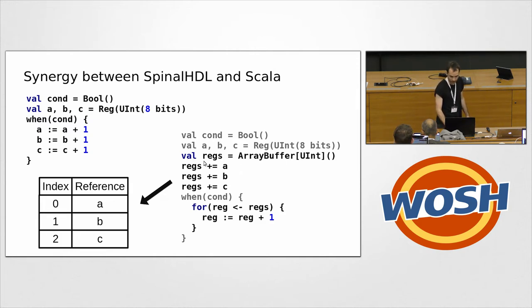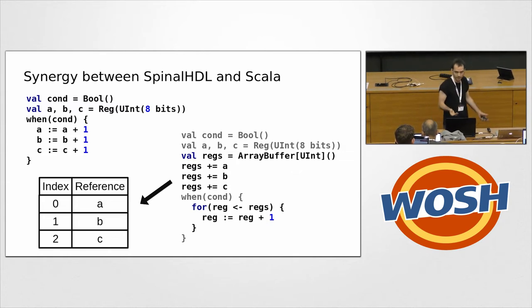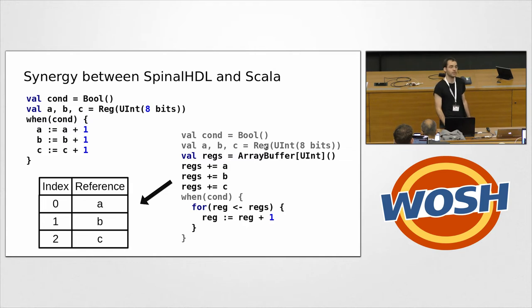And we say that when the count is true, we want to increment all our registers. That's completely useless, but that's an example. And there is an alternative way of describing that, which is, again, useless, but for the example. Where, okay, we define a count A, B, and C as before. That's because I put it in gray to show that it is as before without modification. And then, we will go into the software world. We will create a variable named regs, which is not hardware, because it is an array buffer. And an array buffer is something which comes from the Scala library. It is a dynamic array.